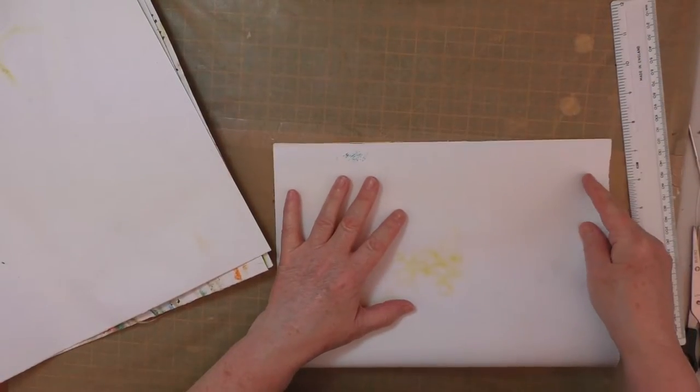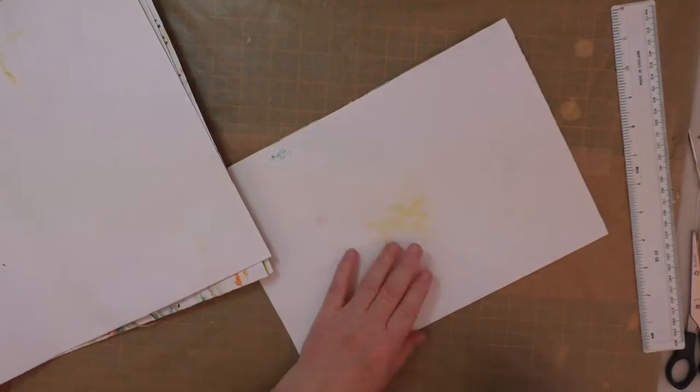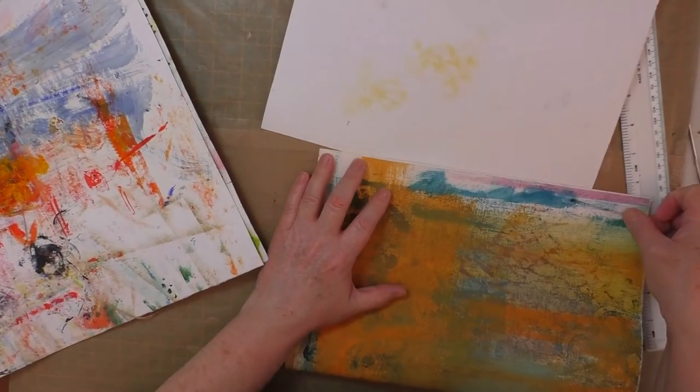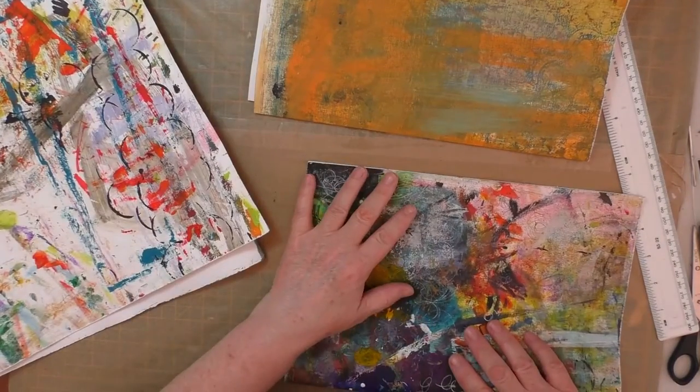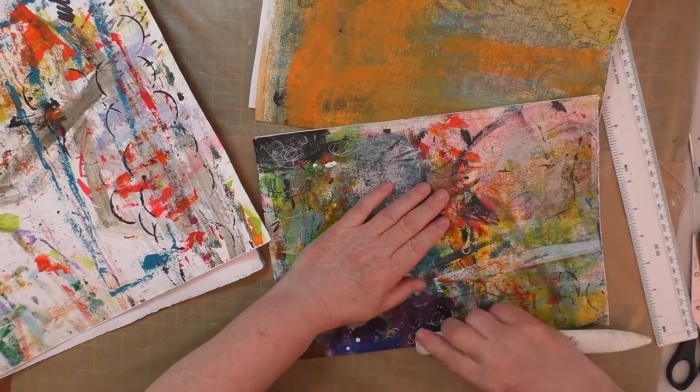So just getting the sheets into the sort of running order that I want. Now just folding them in half, just using the bone folder to get a crease along the center before I look to bind it.